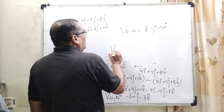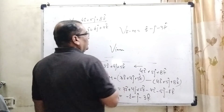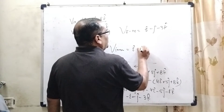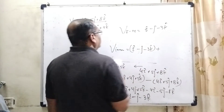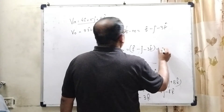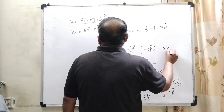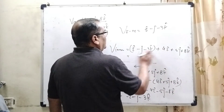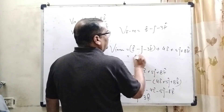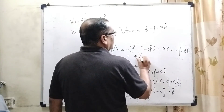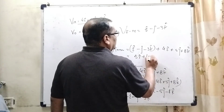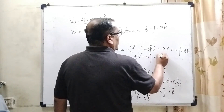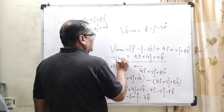Now, the net velocity of the image, which moves along with the mirror, is the image-relative-to-mirror velocity plus the mirror's velocity: (i-cap minus j-cap minus 3k-cap) plus (4i-cap plus 5j-cap plus 8k-cap). This gives 5i-cap plus 4j-cap plus 5k-cap. So here is the answer.